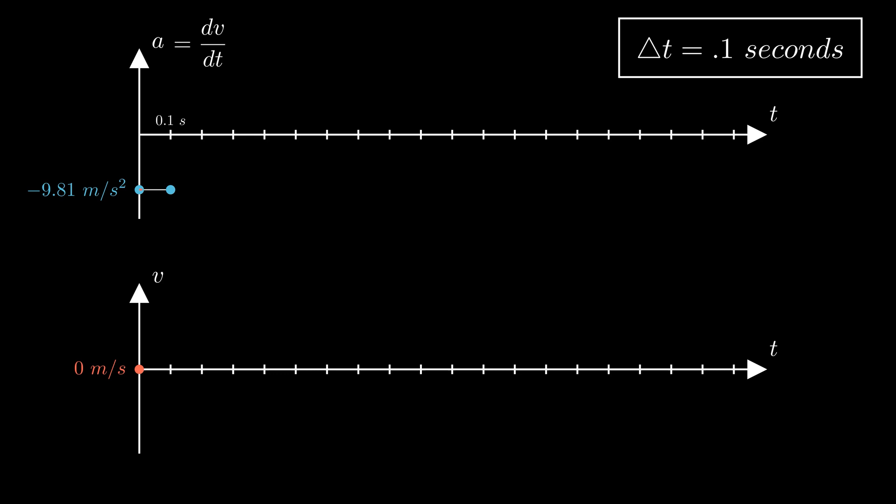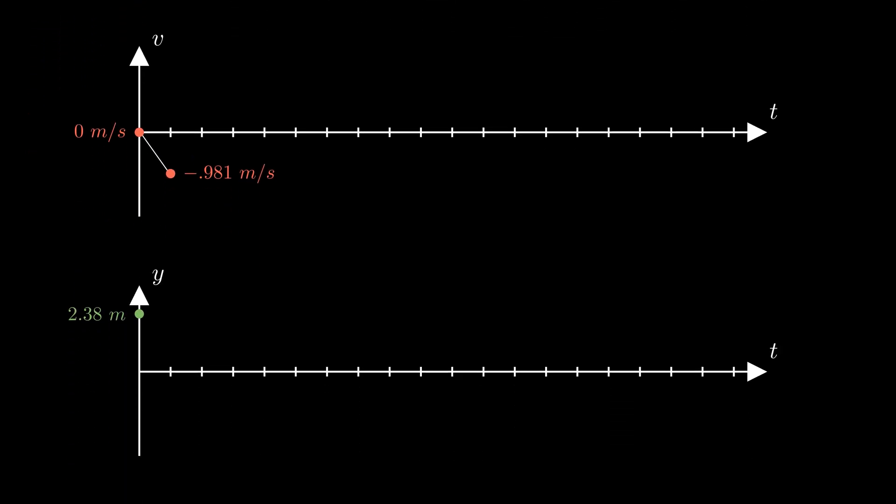As a reminder, integrating is essentially calculating the area under the curve, which for this step is the area of a rectangle that's 0.1 seconds wide times negative 9.8 meters per second squared tall, which gets you a decrease in velocity of 0.98 meters per second, which we can then plot on the velocity graph. Just like last episode, based on the definition of velocity, we can integrate again to find out how much the vertical position changed during this step. The calculated area of this triangle is negative 0.05 meters, bringing the height of the parachute man down to 2.33 meters.